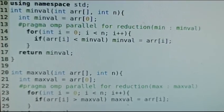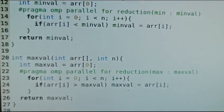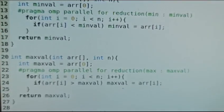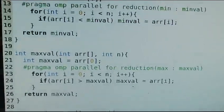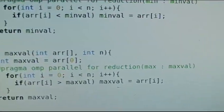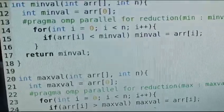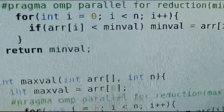Once the loop is completed, OpenMP will combine all private copies of maxval into a single shared value representing the maximum value in the array.